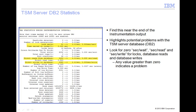At the end of the server instrumentation output is a set of DB2 statistics. These values are measurements of the TSM server calls to its DB2 database. Values greater than zero in the seconds per lock weight, or in the timings for database reads and database writes, are an indication of a problem with the TSM DB2 database.